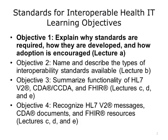This unit will cover the following learning objectives: 1. Explain why standards are required, how they are developed, and how adoption is encouraged. 2. Name and describe the types of interoperability standards available. 3. Summarize the functionality of HL7v2, CDA, CCDA, and FHIR. 4. Recognize HL7v2 messages, CDA documents, and FHIR resources. This lecture will discuss the necessity for standards, and then explain how they are developed and how adoption is encouraged.